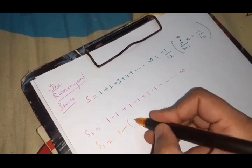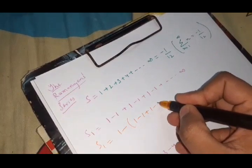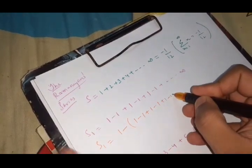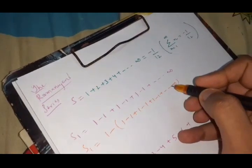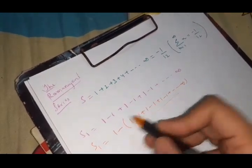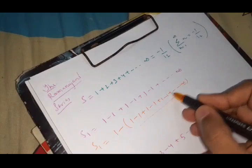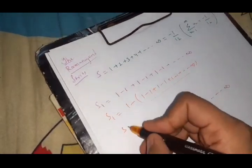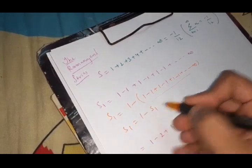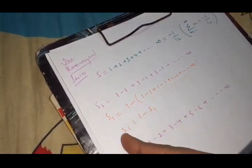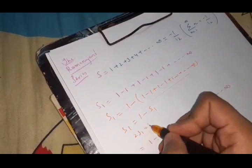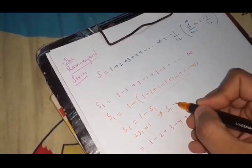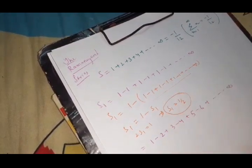So what they thought? They thought of writing the same series in a different way. Like this, just bracketing and writing it down. What you will get? This is the same. This one, S1. This is same S1. 1 minus 1 plus 1 minus 1. So what you are getting? S1 as 1 minus S1. So when you will take this into the LHS, you will get 2S1 is equals to 1. So we will get S1 as half.